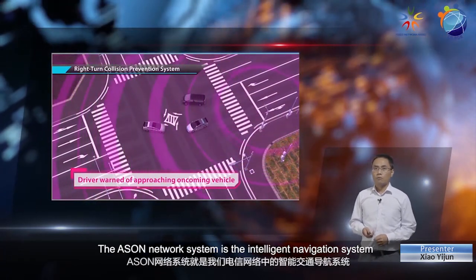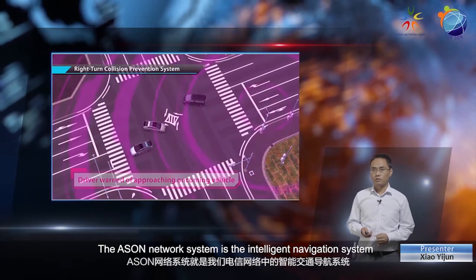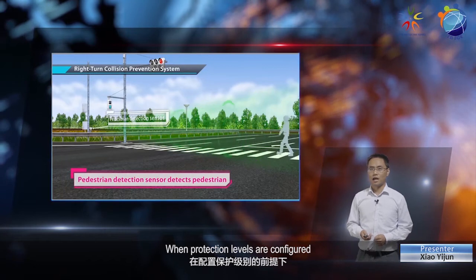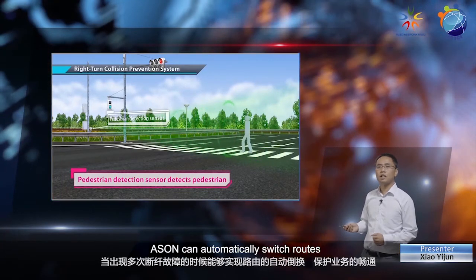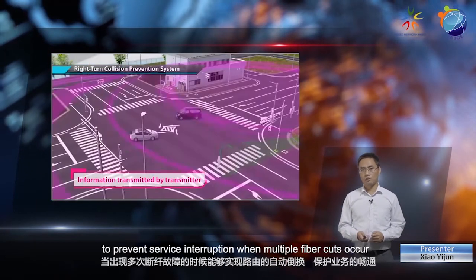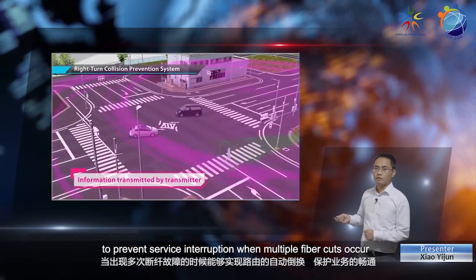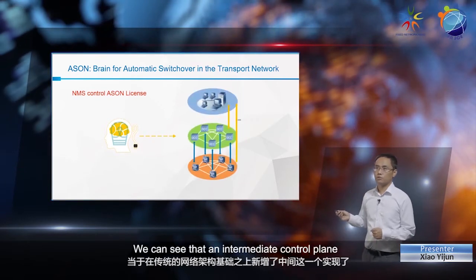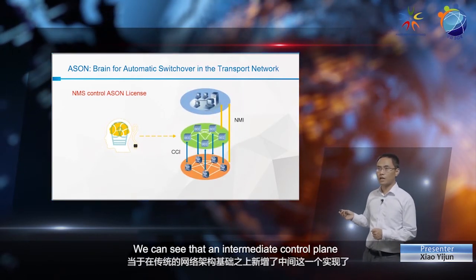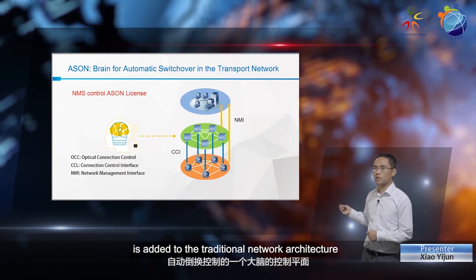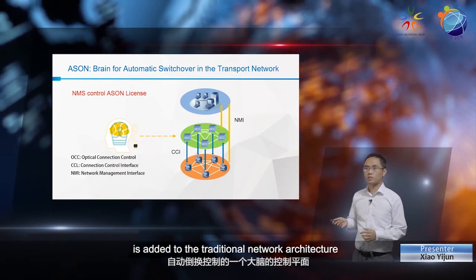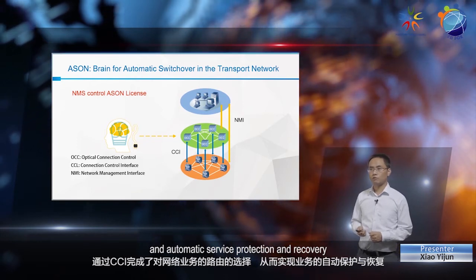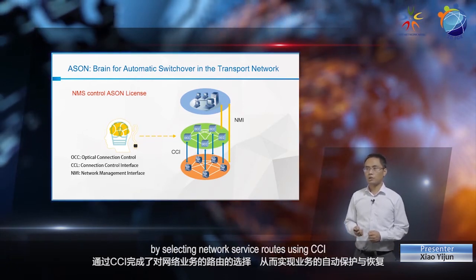The ASAN network system is the intelligent navigation system for the telecommunication network. When protection levels are configured, ASAN can automatically switch routes to prevent service interruption when multiple fiber cuts occur. This figure shows the architecture of an ASAN network. We can see that an intermediate control plane is added to the traditional network architecture, which enables automatic switchover control and automatic service protection and recovery by selecting network service routes using CCI.